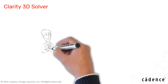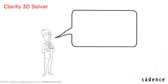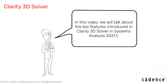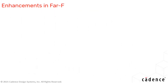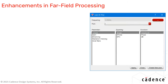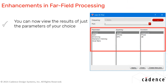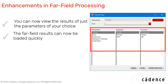In this video we will talk about the key features introduced in Clarity 3D Solver and Systems Analysis 2021.1. The far field processing capability has been enhanced further. In earlier releases it took significantly long to load the results, particularly for large designs. However, now you can view the results for just the parameters of your choice, enabling faster loading and viewing of data.